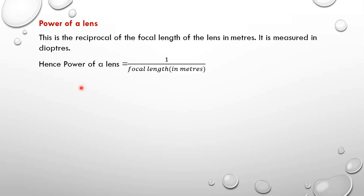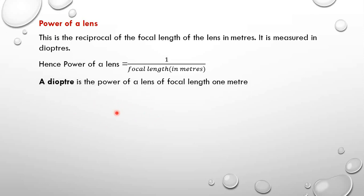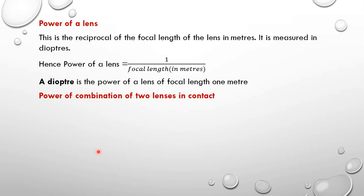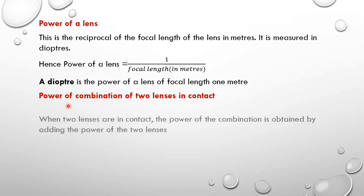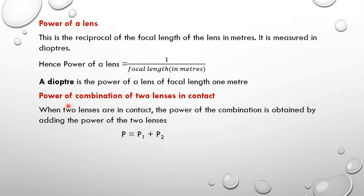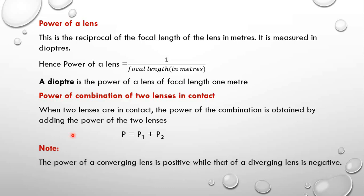Let us look at the power of a combination of two lenses in contact. When two lenses are in contact, the power of the combination is obtained by summing the individual powers: P equals P1 plus P2. Note that the power of a converging lens is positive, while that of a diverging lens is negative.